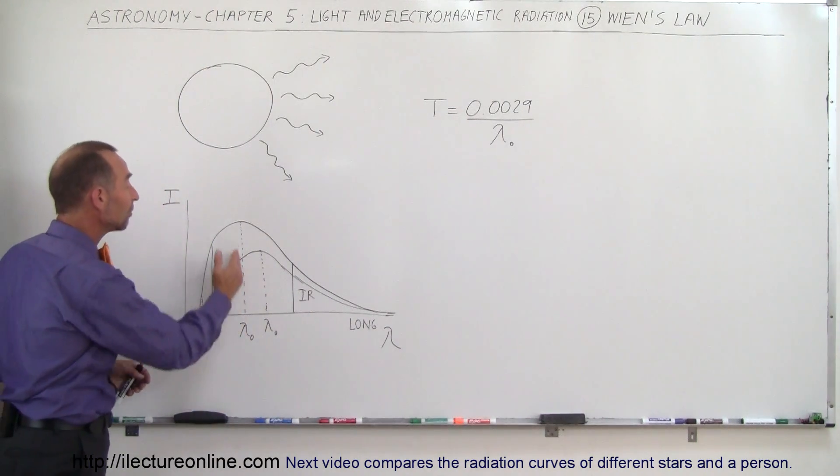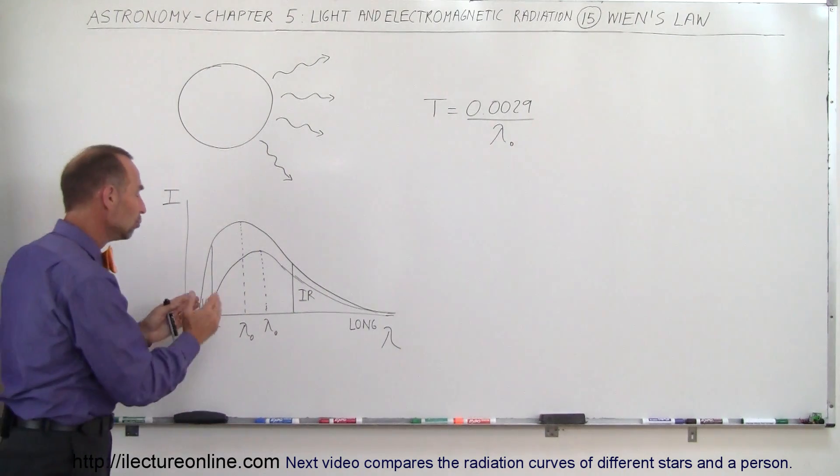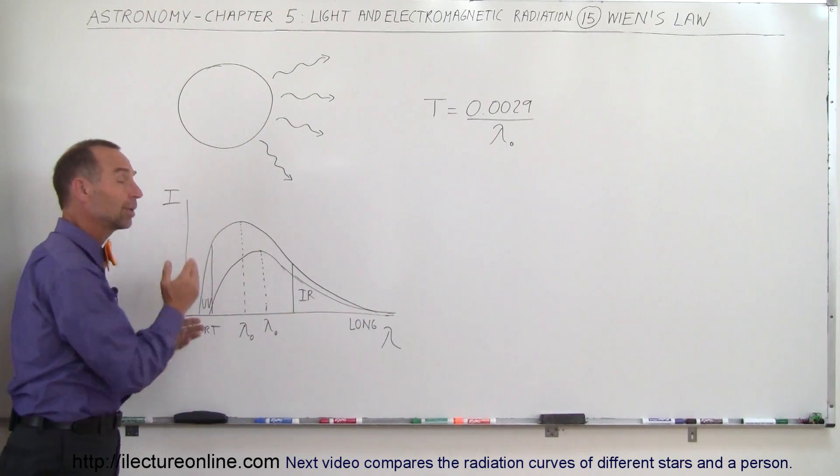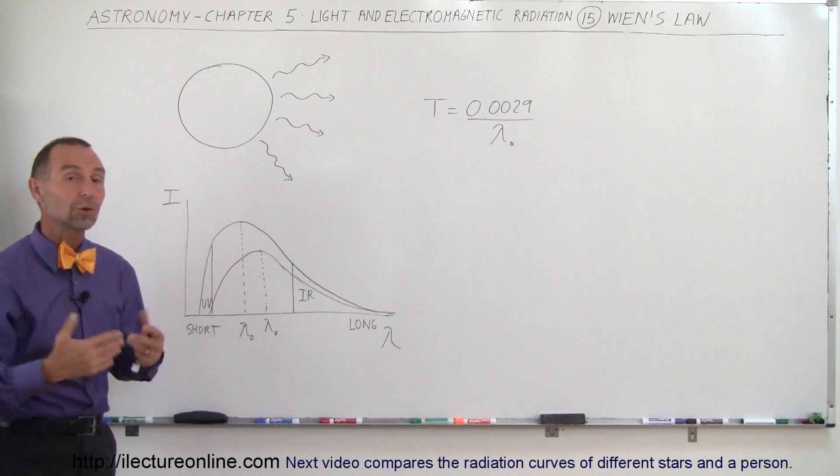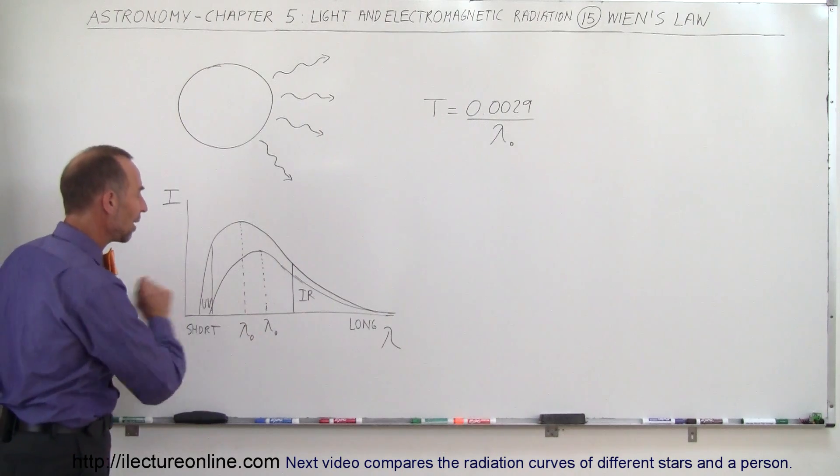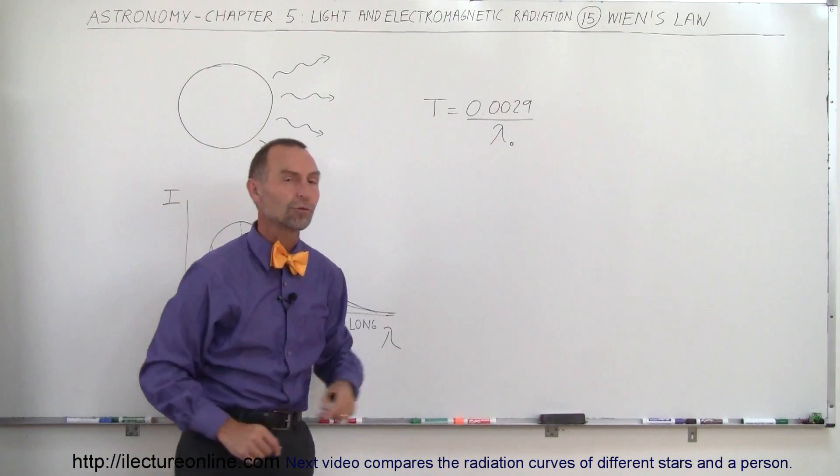You can see though that at some point it peaks and we call that the peak wavelength of the radiation curve. There's more atoms that vibrate at that particular frequency giving off radiation at that particular wavelength than at any other frequency or any other wavelength. So we call that the peak wavelength. And so if we use that value we can find the temperature of the object.